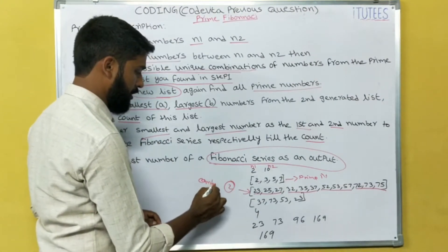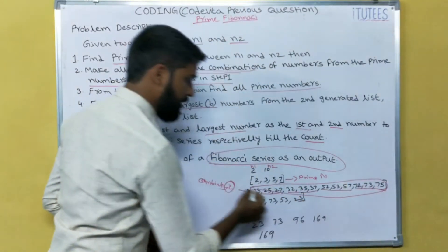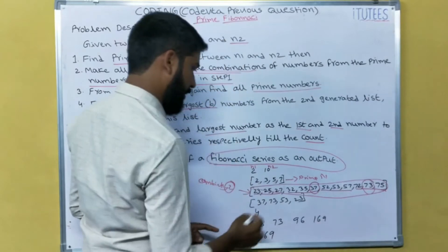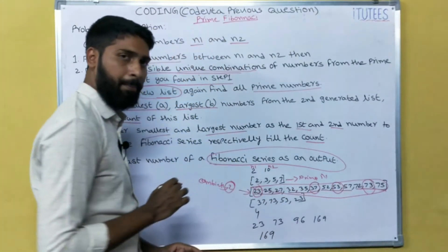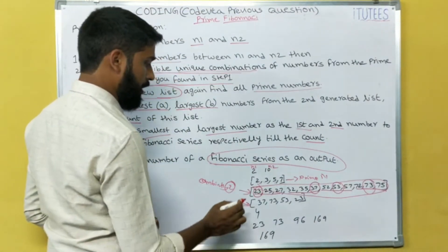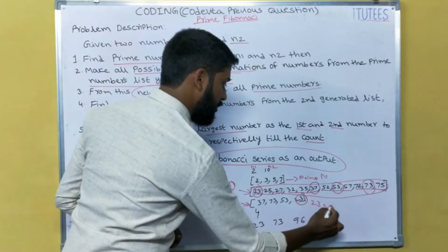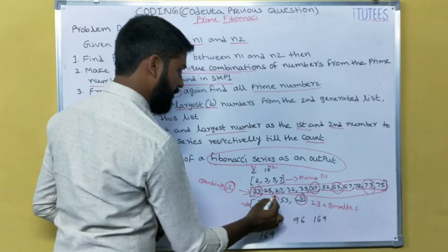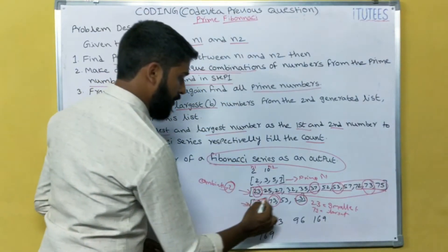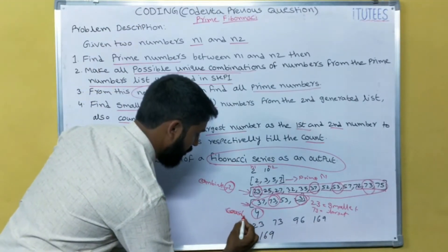So what is the third step? Identify the prime numbers in this list. The prime numbers are: 37, 73, 53, and 23. For that, we are going to find the smallest and largest values. What is the smallest value? 23 is smallest. What is the largest value? 73 is largest. And the count — what is the count of the prime numbers? 4. The count equals to 4.